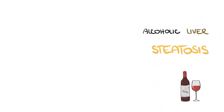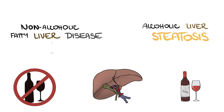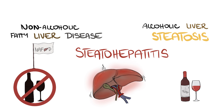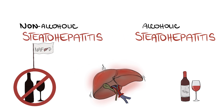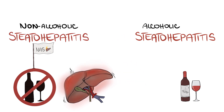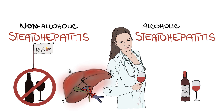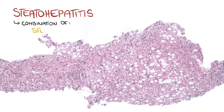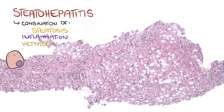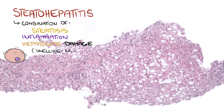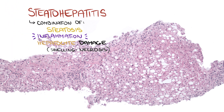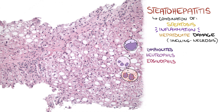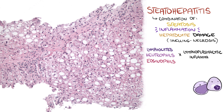Both alcoholic steatosis and non-alcoholic fatty liver disease may progress to steatohepatitis. Much like steatosis, we subclassify these into alcoholic steatohepatitis and non-alcoholic steatohepatitis. Again, proper clinical setting is necessary for the exact diagnosis. Microscopically, steatohepatitis is defined as a combination of steatosis, inflammation, and hepatocyte damage ranging from hepatocyte swelling to necrosis. The inflammation is usually a mixture of lymphocytes, neutrophils, and eosinophils — such mixed inflammation differs from the mostly lymphoplasmacytic inflammation seen in chronic hepatitis.